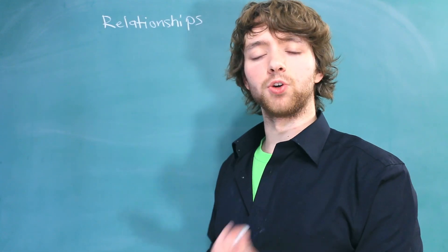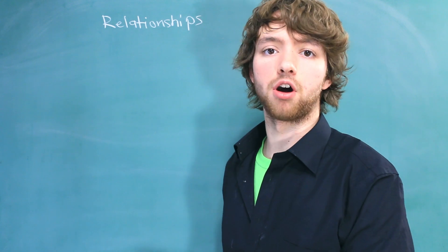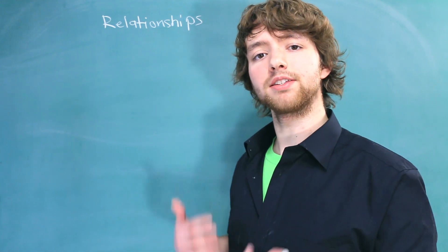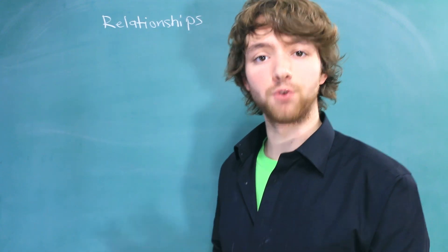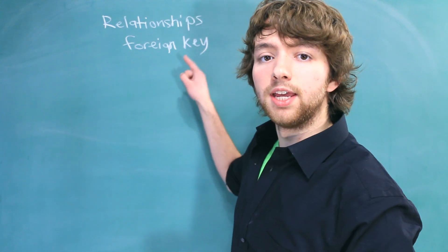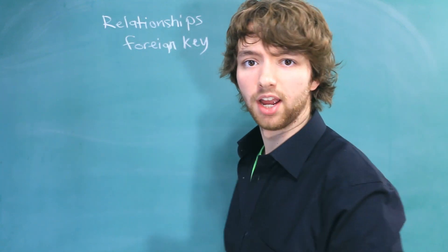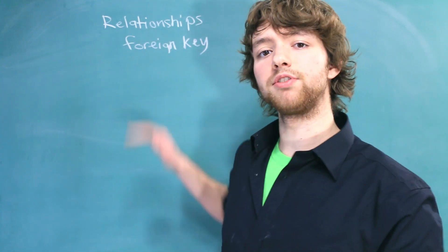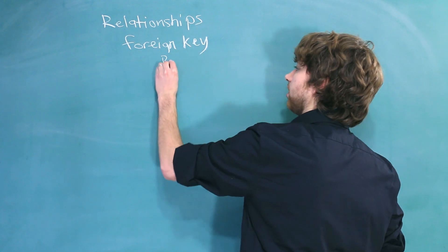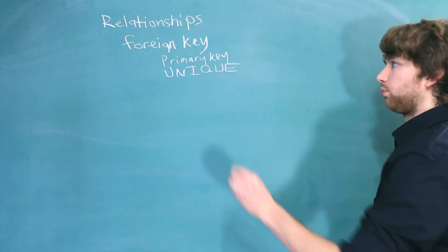Relationships are created when we have a column that references another column in a database. This is what's known as a foreign key. A column is a foreign key if it references another column, and the column it references has to be either a primary key or have the unique attribute.